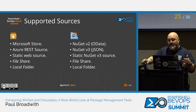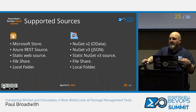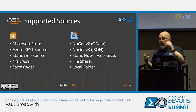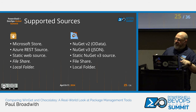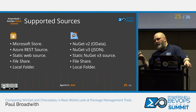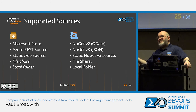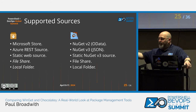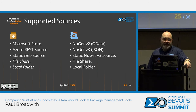WinGet supports file shares and local folders, though it doesn't support UNC paths — you'd need to map a drive. It also supports local folders, but only pointing to individual manifests, not a folder containing multiple manifests. So if you wanted Adobe Acrobat, you'd have to point it to the specific manifest file, not a folder containing manifests. I'm not sure why that's the case, but that's how it works.